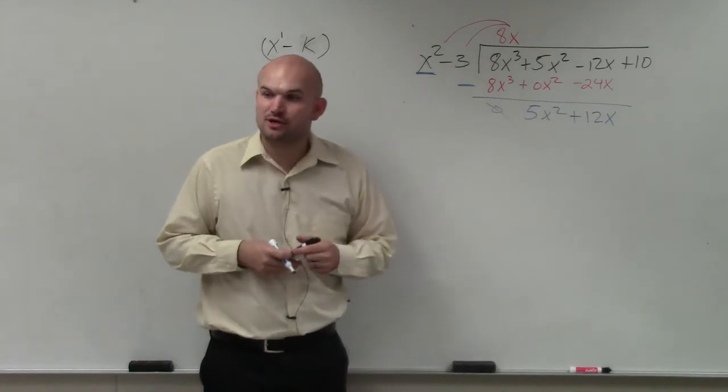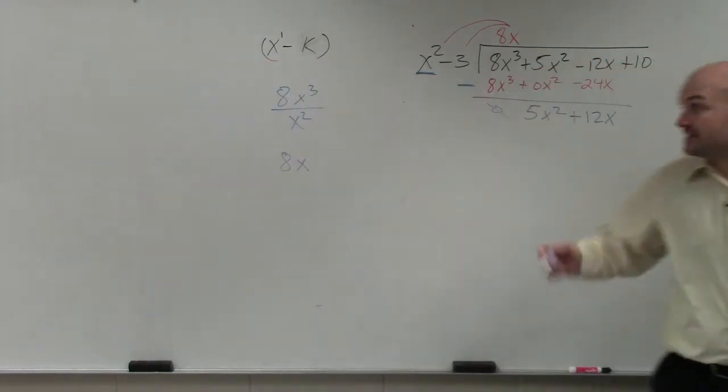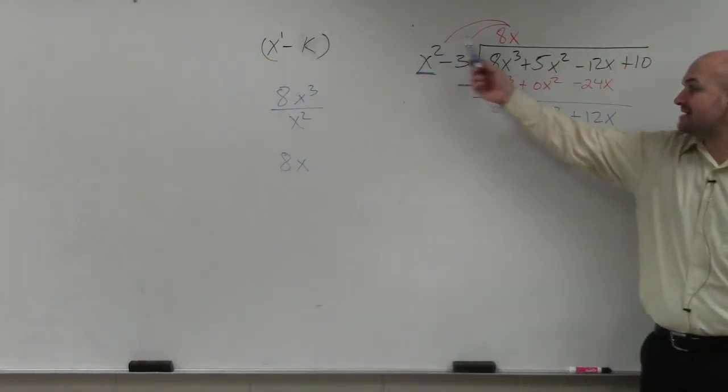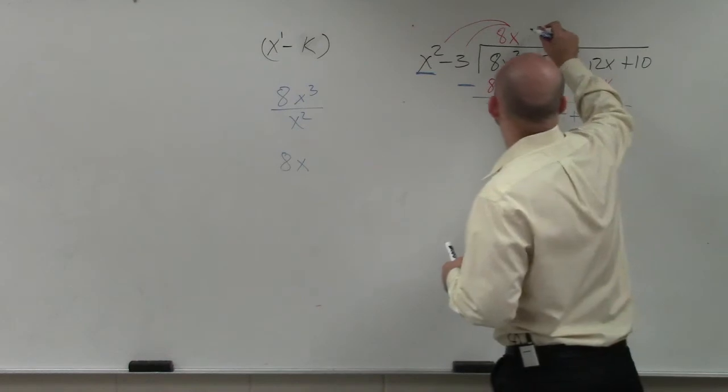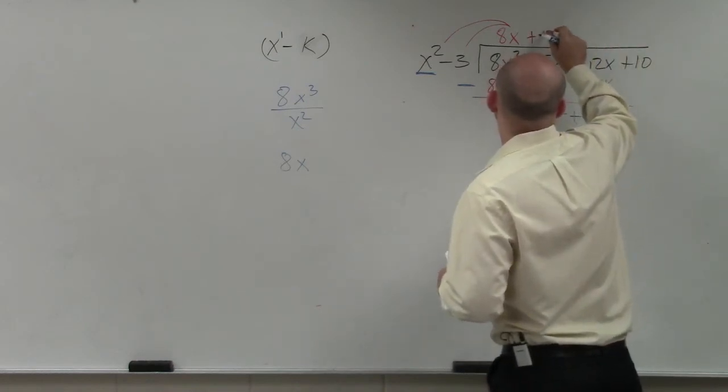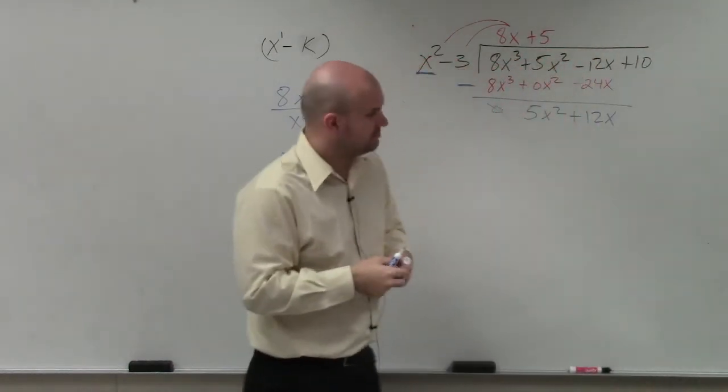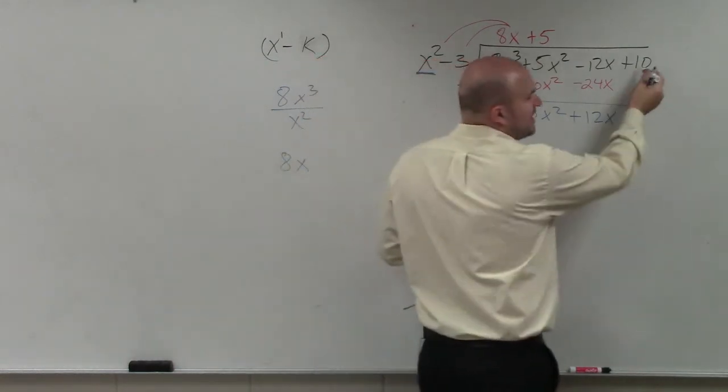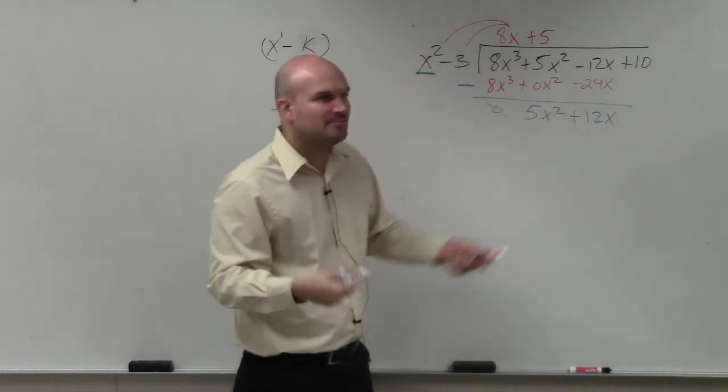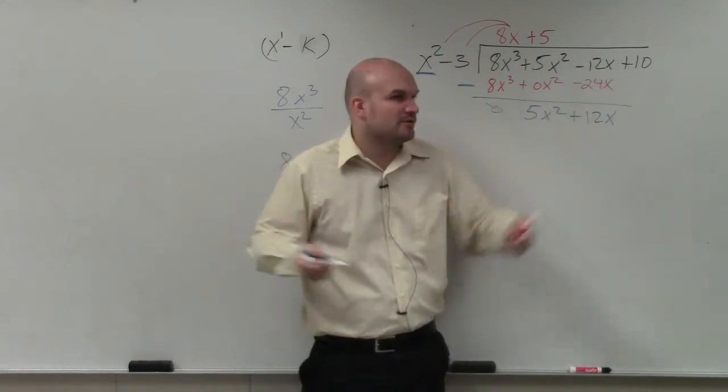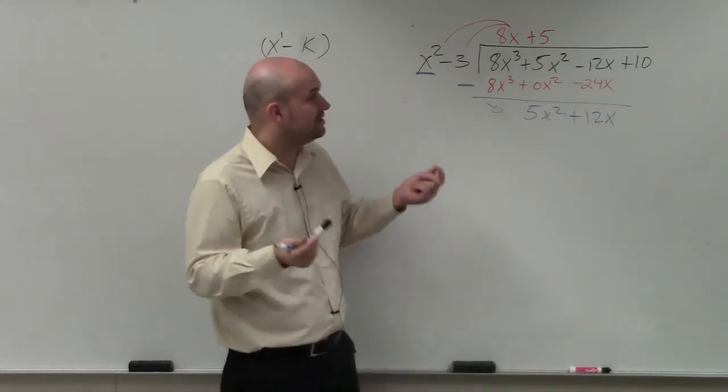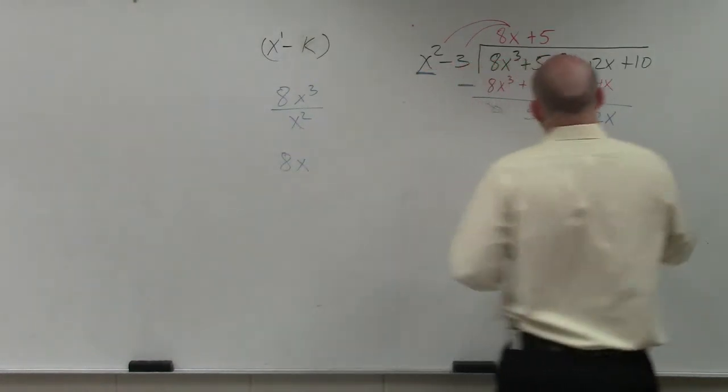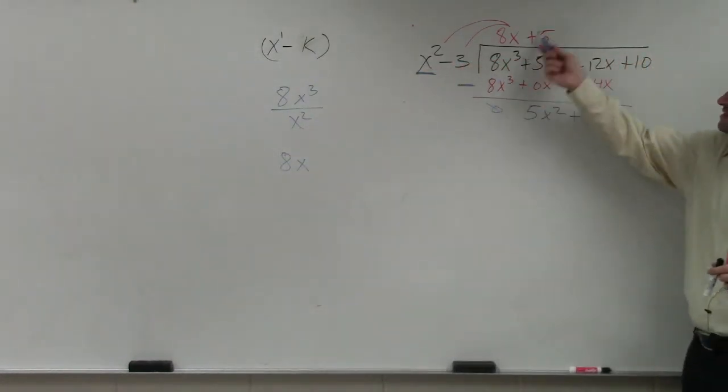Then we do the process all over again. Now we go back and we say, how many times is x² divided into 5x²? Five times. It's not necessary to drop down the constant yet, but I only drop it when it's necessary. But if you want to show it there, there's nothing wrong with dropping the 10. That's just my personal way of doing it.